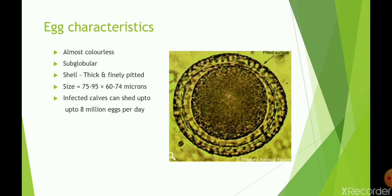About the egg characteristics: they are almost colorless and subglobular. The shell is thick with fine pittings. In contrast, Toxocara canis, which affects dogs, has coarse pittings. The size of Toxocara vitulorum eggs is 75 to 95 micrometers in length and 60 to 74 micrometers in breadth. If a calf is infected, it can shed approximately 8 million eggs per day.